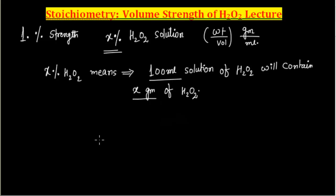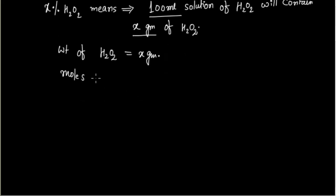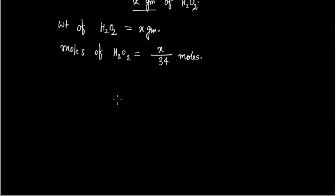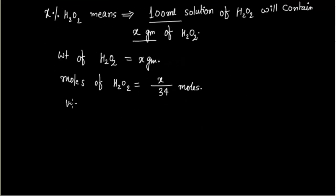We can convert this percentage strength into molarity. The weight of H2O2 is x grams. Moles of H2O2 equals weight divided by molecular weight, that is 34. So moles of H2O2 = x/34. The volume of solution is 100 mL, which is 0.1 liter.